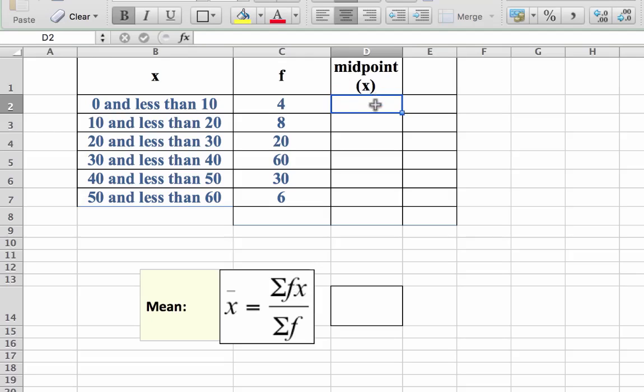So f by x, my midpoint is going to be your 5, the next one is going to be 15 and then 25, etc.